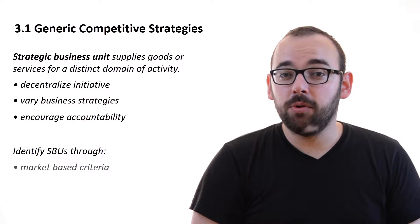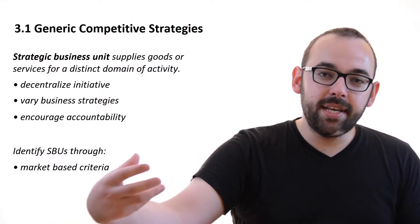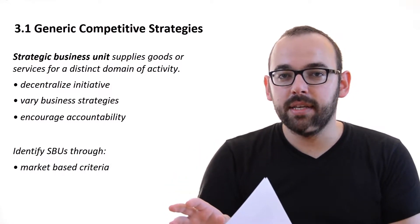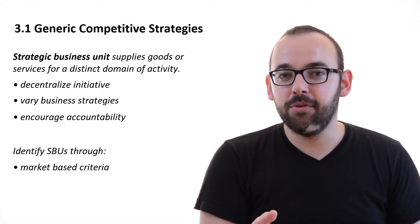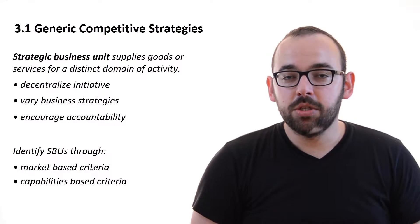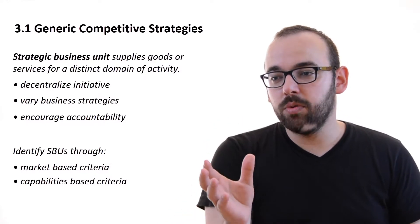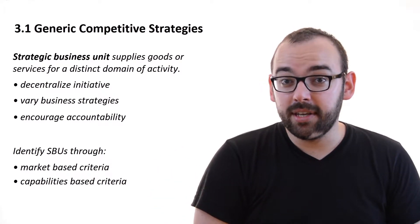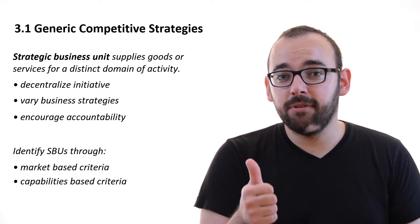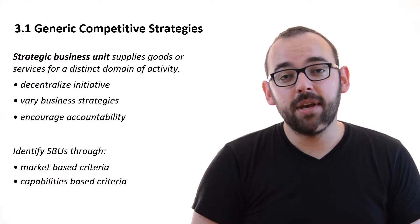There are two ways. We can look at so-called market-based criteria, where we look at the market we serve and reason backwards toward our organization — identifying which group of employees serves a particular market and calling them a strategic business unit. Or we can use capabilities-based criteria, where we differentiate strategic business units by the strategic capabilities they possess. For instance, one unit is producing cars and the other unit is selling the cars — they clearly have different strategic capabilities and will therefore be separated as strategic business units.